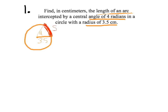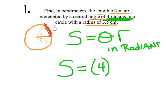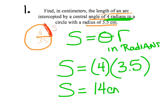A central angle is just the angle at the center. When I see the word arc, I use the SOAR formula: s equals theta r. First, ask yourself: is theta in radians? They tell us it is, so no conversion needed. S equals 4 times 3.5, and I get an arc length of 14 centimeters.